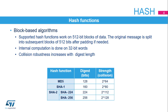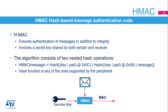MD5 is the less-robust version with only a 128-bit digest. The SHA standard has two versions: SHA-1 and the more recent SHA-2, with its 224 and 256-bit digest-length versions. The hash-based message authentication code, or HMAC, is used to authenticate messages and verify their integrity. The HMAC function consists of two nested hash functions with a secret key shared by the sender and the receiver. The hash function involved in the HMAC computation can be any one supported by the peripheral: MD5, SHA-1, or SHA-2.